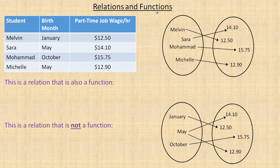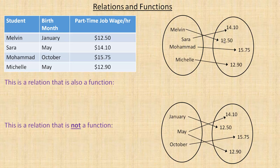In this tutorial we're going to take a look at relations and functions, and we're going to use this data in the top left hand corner. It lists four different people, their birth months, and how much they make per hour in their part time job. On the right side here are a couple of examples of mapping diagrams. In this one I'm talking about just the person and how much they make. Melvin makes 12.50, so Melvin points to 12.50. It doesn't matter that Melvin's and Sarah's lines cross. Sarah makes 14.10, so Sarah maps to 14.10. Mohamed maps to 15.75 and Michelle to 12.90. So that's an example of a mapping diagram.